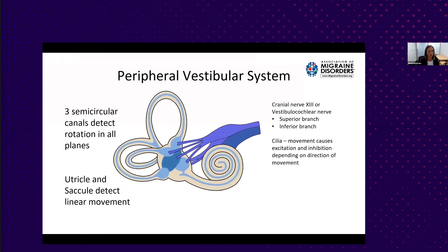Let's go over a little bit of the anatomy and physiology of the inner ear. We have the three semicircular canals, and then we have the utricle and the saccule—that makes up the vestibular part of the inner ear. The cochlea is for hearing.